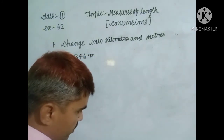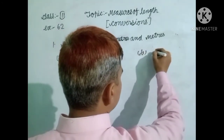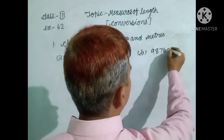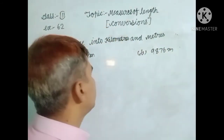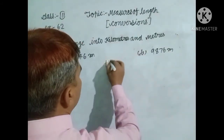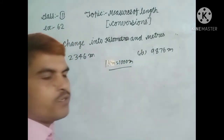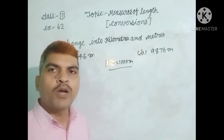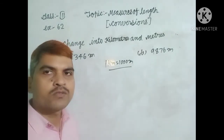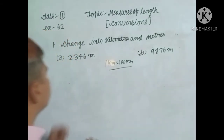Every student should know that one kilometer is equal to one thousand meters. In the previous questions we divided by 100 because one meter equals 100 centimeters. In this case we divide by 1000 because one kilometer is equal to 1000 meters. Let us start.